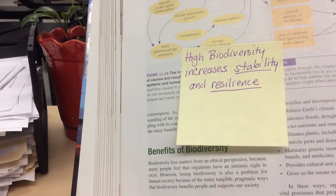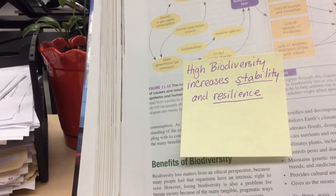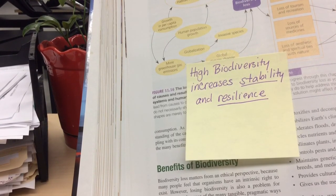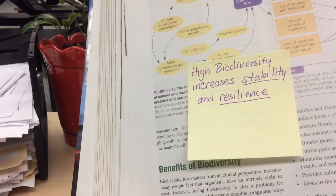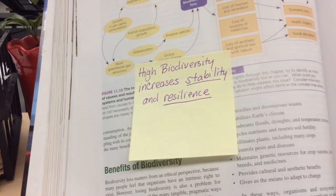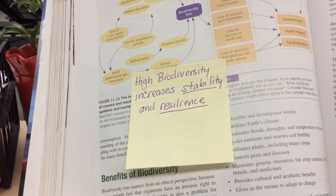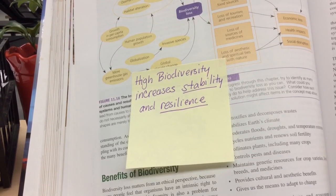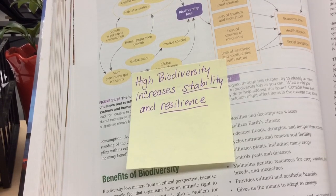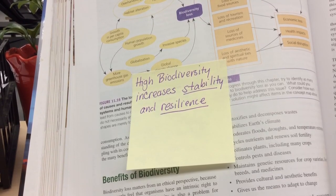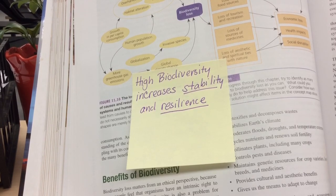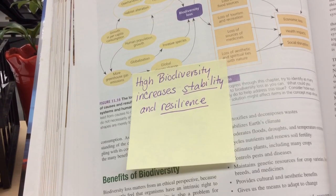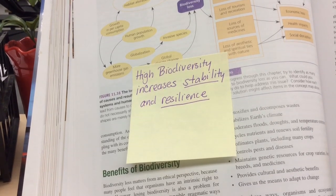On page 290, it talks about why high biodiversity is really important for ecosystems. The more different kinds of species you have, the more stability and resilience. If some sort of change happens — a fire, a flood, global warming, habitat loss — some species will remain. The more different kinds you have, the more your ecosystem will remain stable and be resilient.